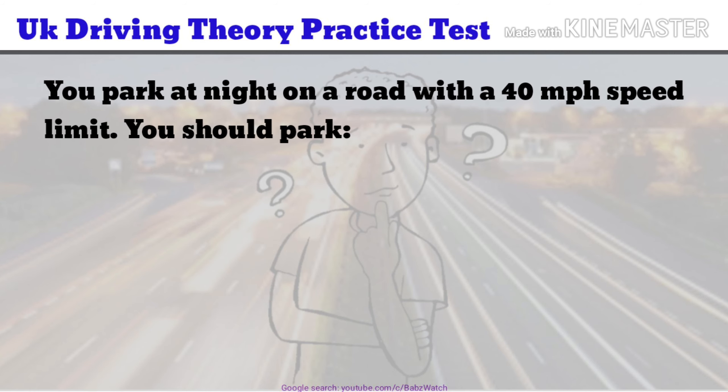UK Driving Theory Practice Test Question 6 of 50. You park at night on a road with a 40 miles per hour speed limit. You should park: a. Facing the traffic. b. With parking lights on. c. With dipped headlights on. d. Near a street light. The correct answer is b.